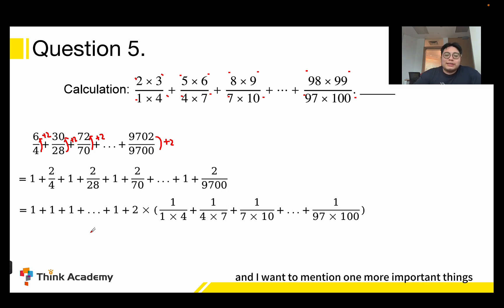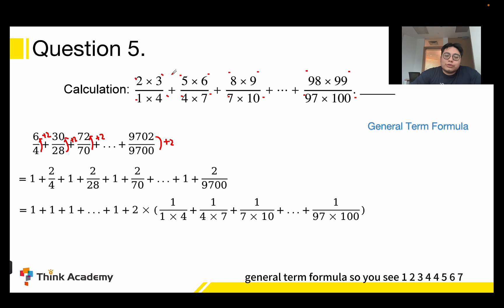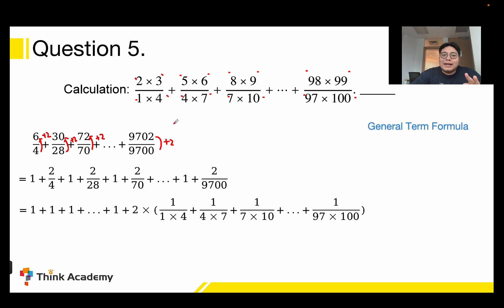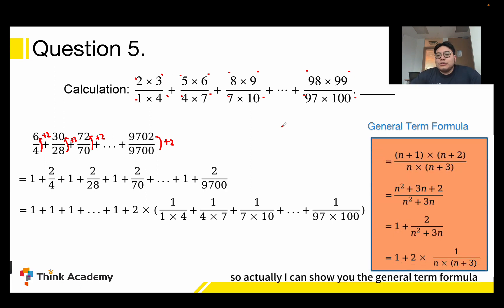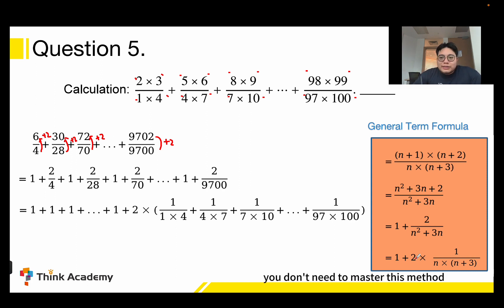I want to mention one more important thing: this is the first method where you calculate everything and find the pattern. In junior high school you can use another method called the general term formula. You see: 1, 2, 3, 4; 4, 5, 6, 7 — we can use n to represent the first number, so 4 is n+3, 2 is n+1, 3 is n+2. This general term formula can also help you rewrite this fraction, but you don't need to master this method now.